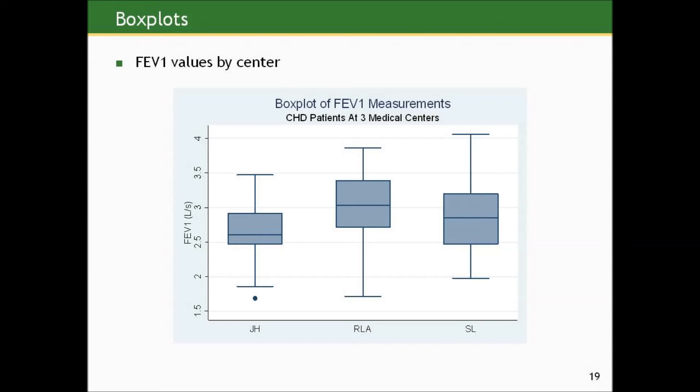Since we have the luxury of individual level data, we can actually look at the box plots of the distribution of FEV1 values by center. And you can see that those at Rancho Los Amigos have the highest values, followed by those at St. Louis University, followed by those at Johns Hopkins when you compare the medians. But there's a lot of crossover in the distributions between the three groups. So it's hard to tell whether this is overwhelming evidence of similarity or differences.